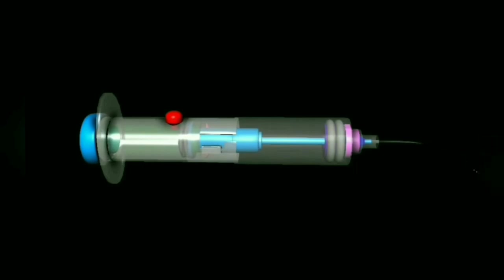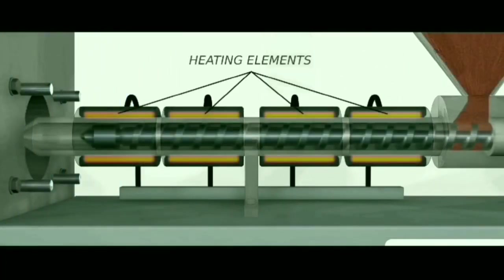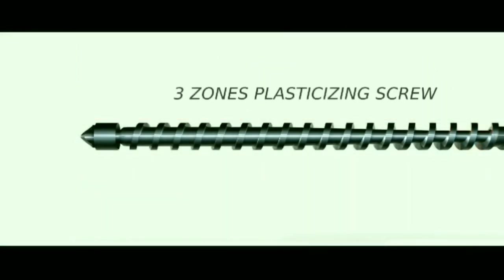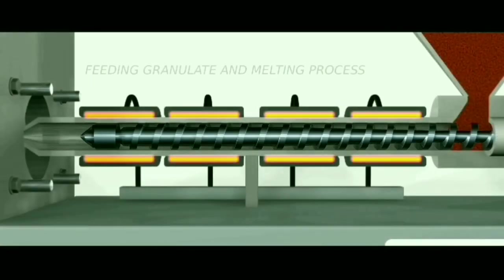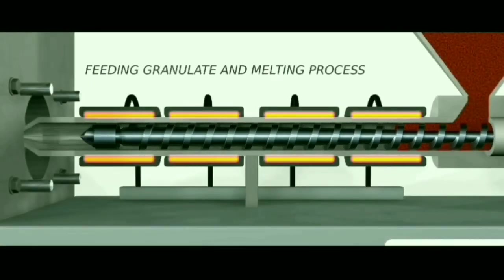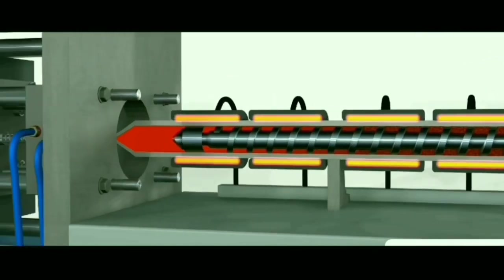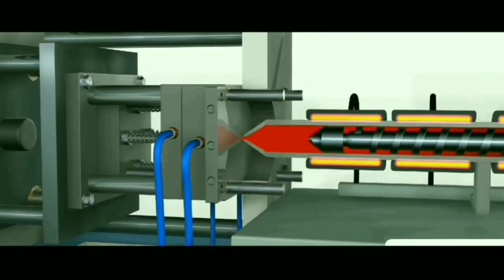Moving further to the machine — here we can see on the machine what happens. Material is charged into the hopper and transmitted to the barrel. The barrel has heating elements known as heaters. Inside the barrel there is a screw which is divided into three zones: feeding zone, transition zone, and metering zone, along with a non-return valve. When we feed the granules from the hopper to the barrel, the material gets melted.